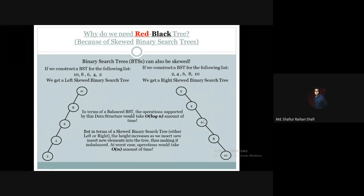For example, in a right skewed binary search tree, suppose we want to search for element 10. We compare 10 with 2 — 10 is greater, so we move down to the right subtree. Then 10 is greater than 4, so we move right again. Then 10 is greater than 6, so we move right again, and so on until we find 10. We compared with every element in the tree — that is O(n) time. In an imbalanced binary search tree, all operations take O(n) amount of time.